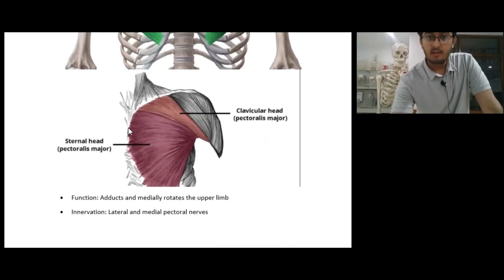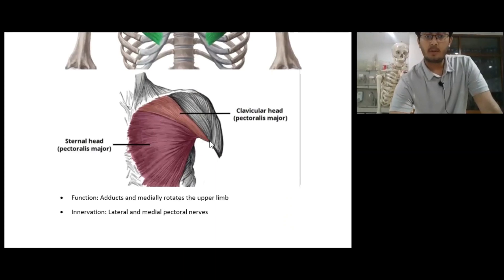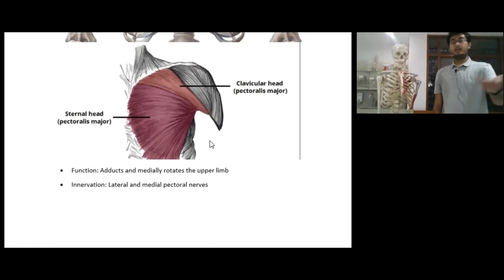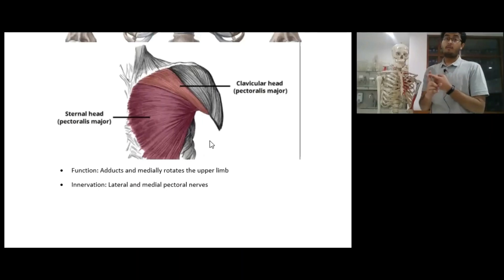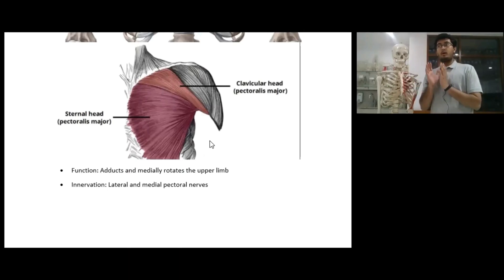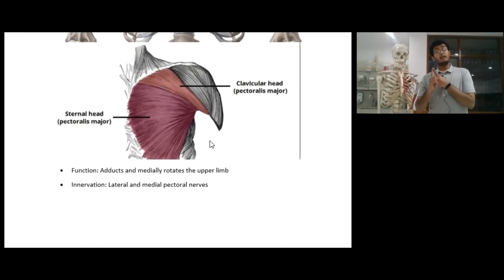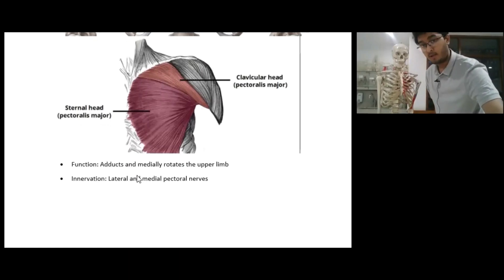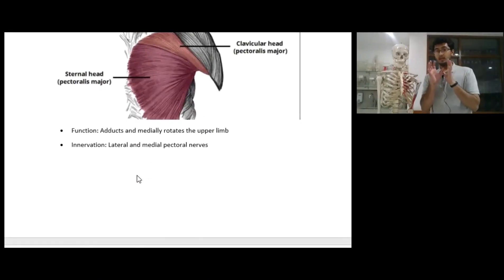So in summary, we have the sternal head and the clavicular head, and the muscle inserts at the lateral lip of the intertubercular groove. The function of pectoralis major is to perform adduction and medially rotate the upper limb. The innervation is really important — it's the lateral and medial pectoral nerves. Examiners tend to focus on innervation and function rather than origin and insertion. We'll be seeing those pectoral nerves again, so just keep that in mind.